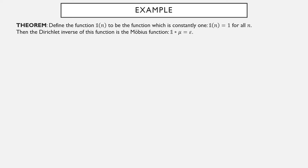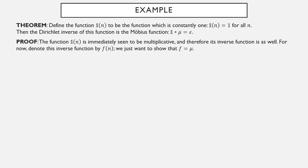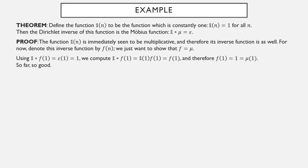Now let's work through an example of finding a Dirichlet inverse. Define the function 1(n) to be the constantly 1 function — it always equals 1. We claim the Dirichlet inverse of this function is the Möbius function mu. The 1 function is definitely multiplicative, and therefore its inverse is as well. We denote the inverse of the 1 function by f and want to show f equals mu. Plugging in 1: this convolution is the epsilon function, so epsilon of 1 is 1. Computing directly gives just f of 1, so f of 1 equals 1, which also equals mu of 1.